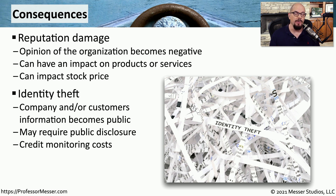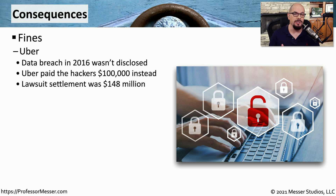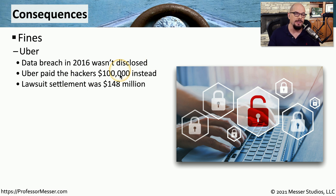If the data gets into the hands of a third party, then it's our responsibility to have a public disclosure so that everybody understands what's happened to this data. This is also going to cost the organization money. Many of these public disclosure laws require that the organization include credit monitoring so that everyone affected by this data breach can keep an eye on what's happening with their data. There might also be fines or lawsuits associated with the data breach. In 2016, the company Uber had a data breach and did not disclose it. Instead, Uber contacted the hackers that originally stole the data and paid them $100,000 to not say anything. There was a lawsuit on this and the settlement from Uber was $148 million.